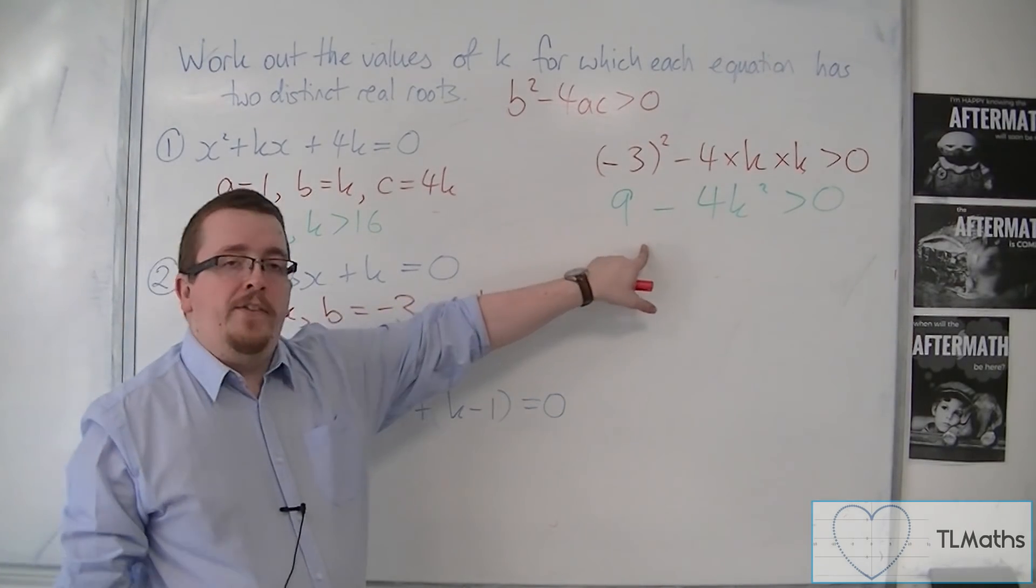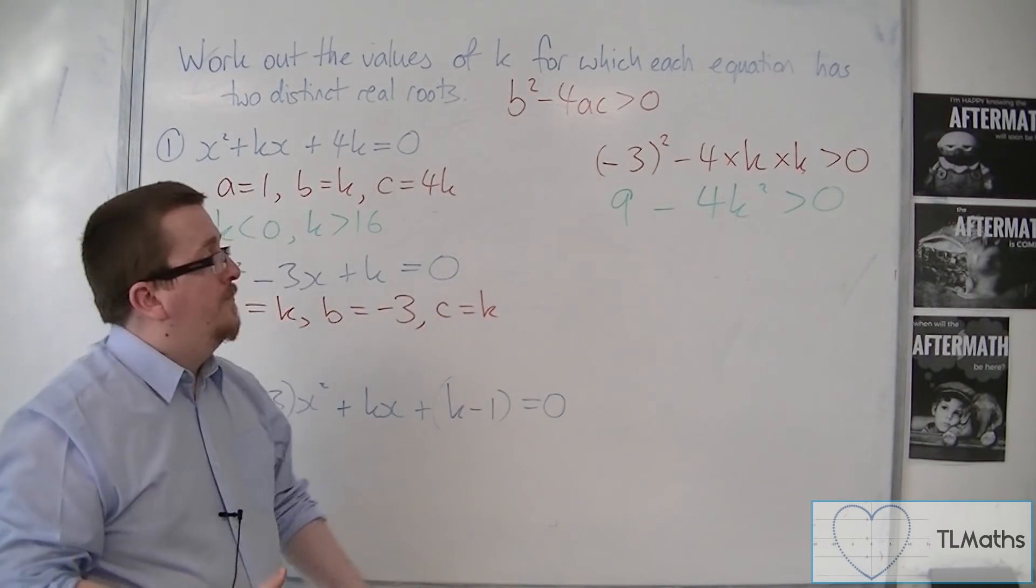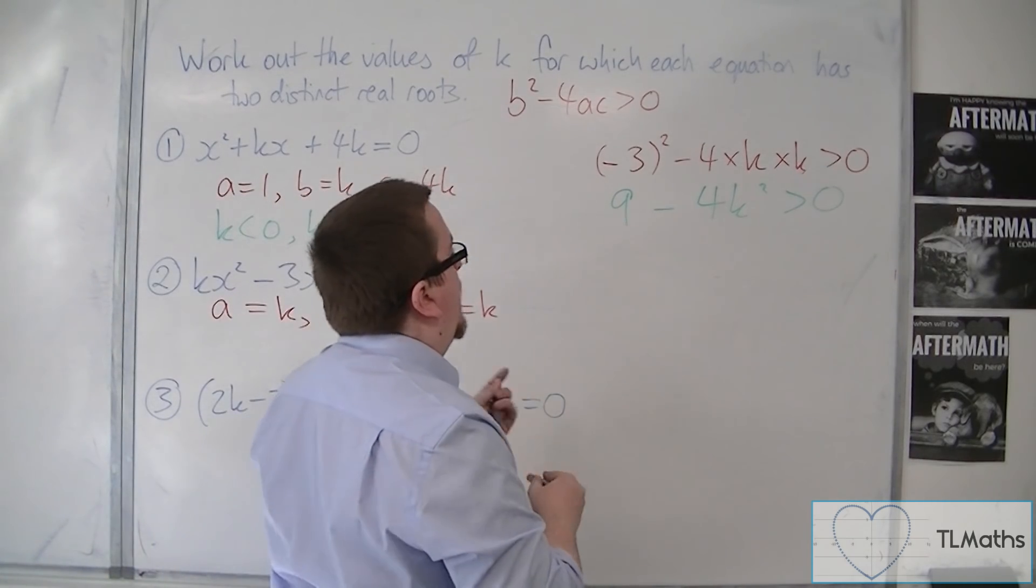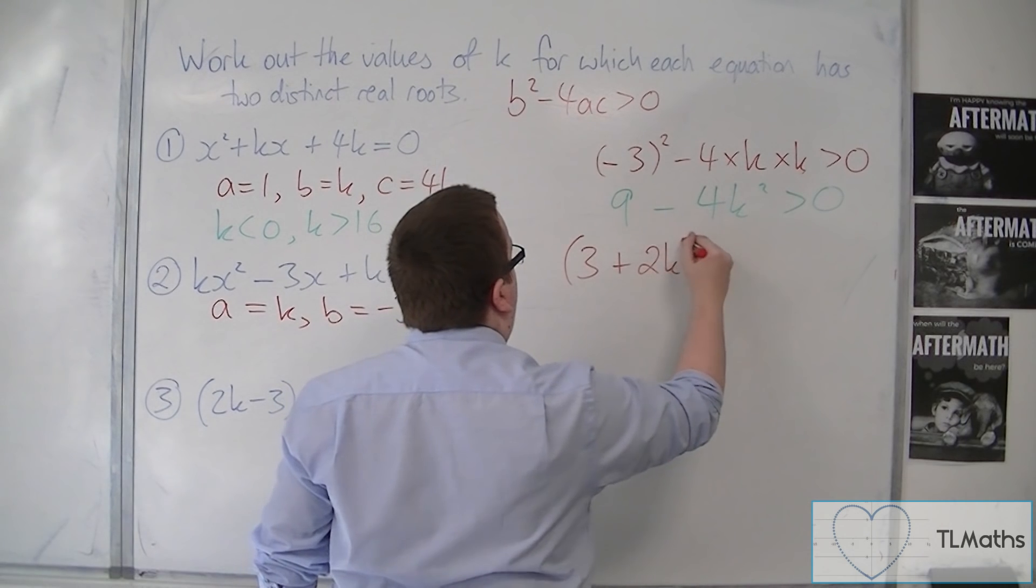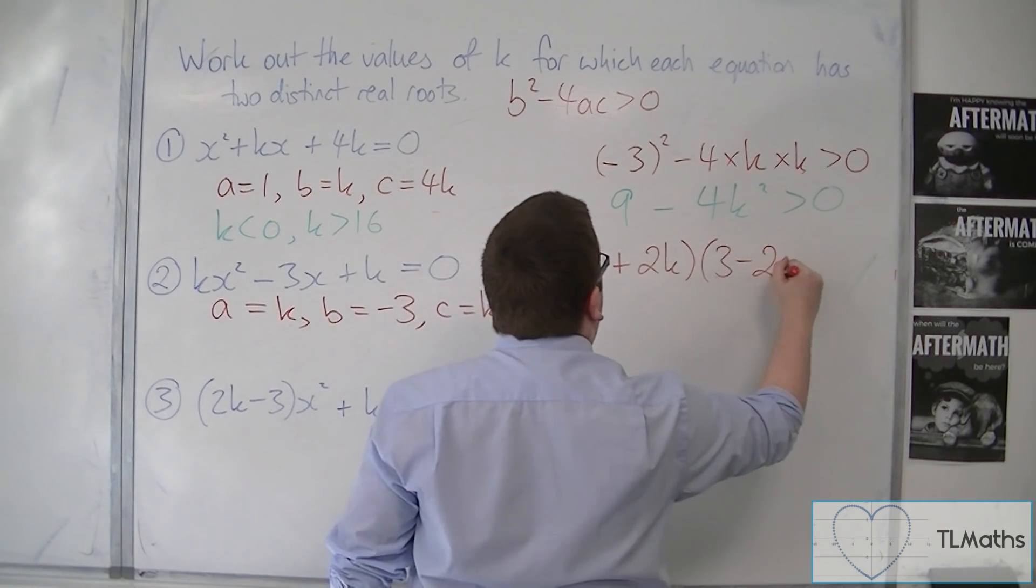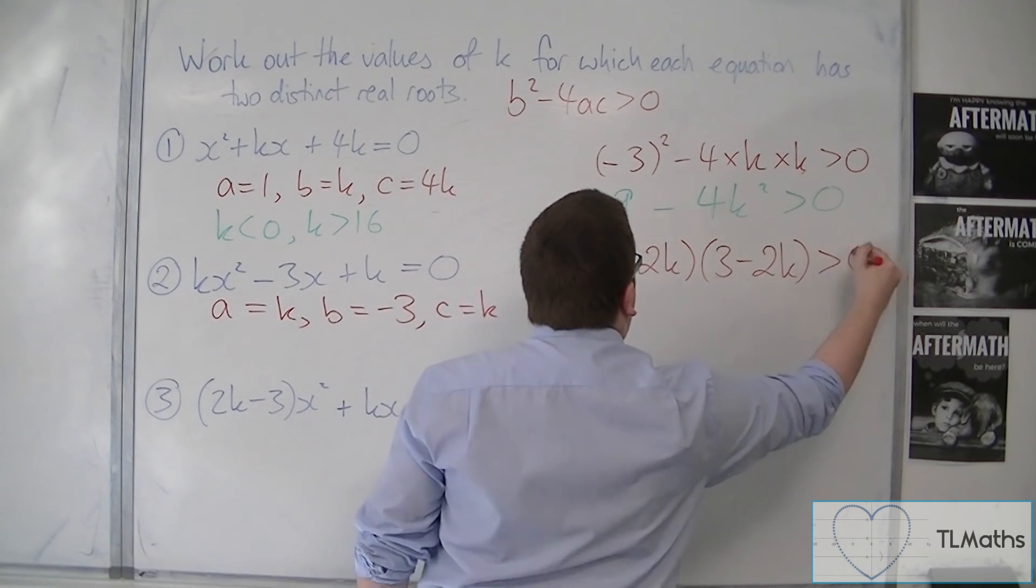Now this is the difference of two squares. So you can factorise that to be 3 plus 2k and 3 minus 2k, greater than zero.